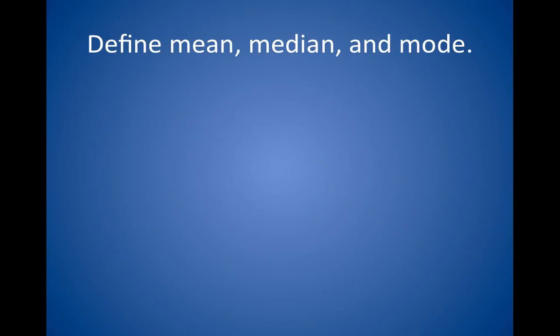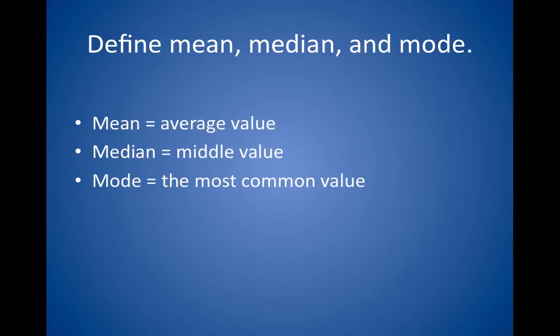Define mean, median, and mode. The mean is the average value, the median is the middle value, and the mode is the most common value. For example, given the numbers 2, 2, 4, and 8: the mean is the average of the four numbers, which equals 4. The median is the middle value; because there are four numbers there is no true middle value, so take the average of the two middle numbers — 2 and 4 — giving a median of 3. The mode is 2, because the number 2 appears twice, more times than any other value. Remember that in a normal distribution, mean equals median equals mode.